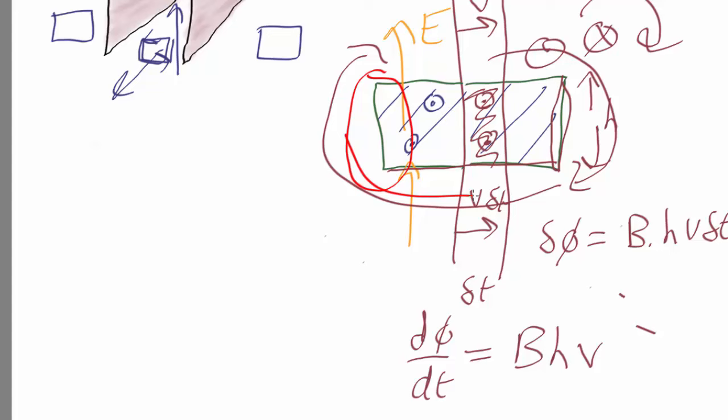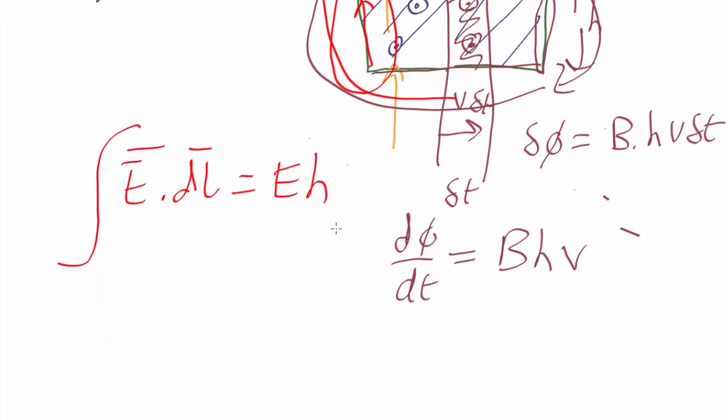If we're going this way around, that means we're going this way up here, which is the same direction as the electric field. So the line integral, E dot dL is just going to be E times h. So what we find is that the electric field times h equals the magnetic field times h times v.